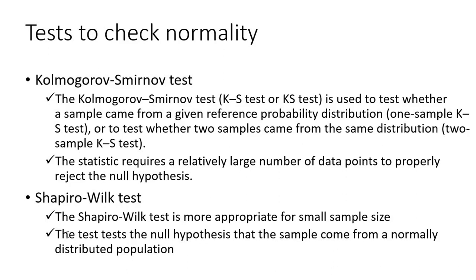The Shapiro-Wilk test is also used for checking normality. It tests the null hypothesis that the sample comes from a normally distributed population. The Shapiro-Wilk test is more appropriate for small sample sizes, but can also handle sample sizes as large as 2000.